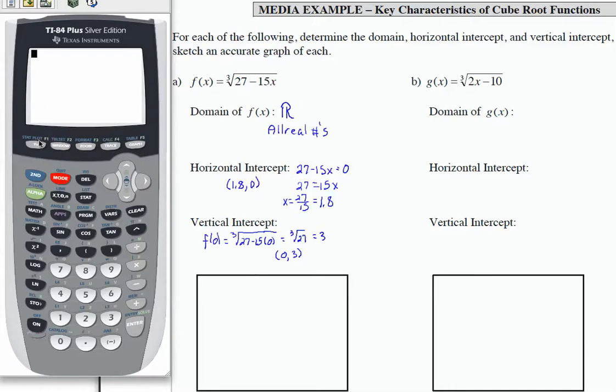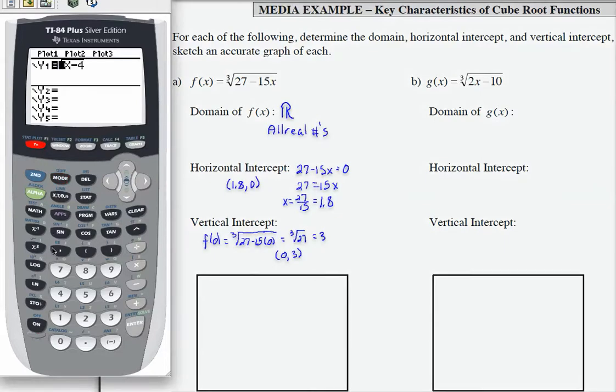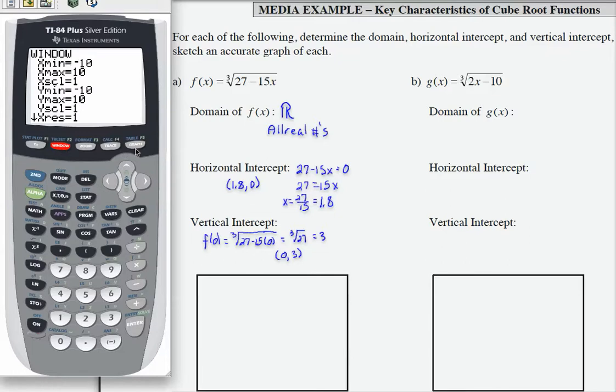So let's go to our y equals, and let's go ahead and clear whatever's in y1. I need to enter the cube root, which is number 4 on the math menu, and what's under the radical is 27 minus 15x. I'm going to use my arrow key to end the radical right after the x, and I'm going to make sure my window is the standard window and see if that's going to give me a good shape for this graph.